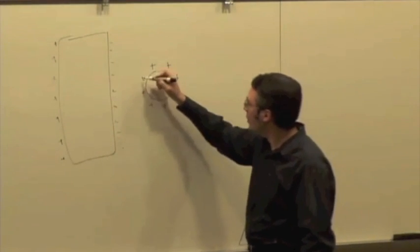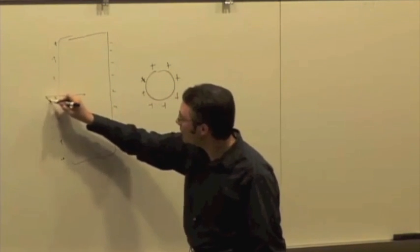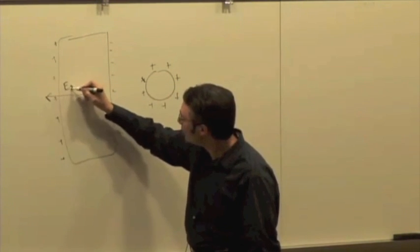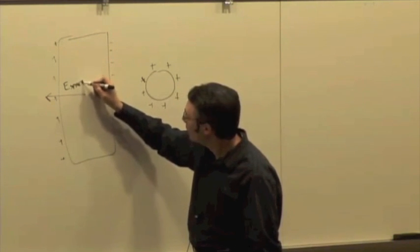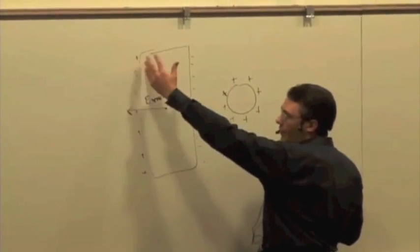One source is the original electric field due to the sphere, and that's pointing away from the positive charge sphere, so that's E of the sphere. But now, because of the polarization, we have charges on the surface here.